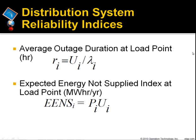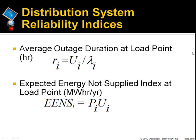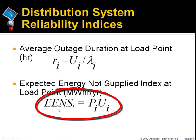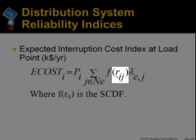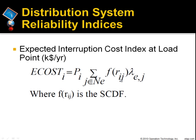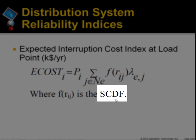The average outage duration at load point i in hours is equal to the annual outage duration over the average failure rate. The expected energy not supplied index, EENS_i, at load point i is equal to the average load of load point i times the annual outage duration. Expected interruption cost index at a load point is calculated by this equation, where the function of R_i,j is a sector consumer damage function, also known as SCDF.